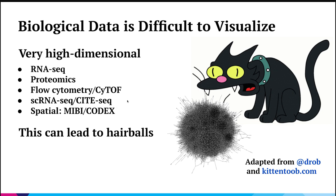For cytometry and CyTOF, you can measure maybe 50 or so proteins, but you're measuring those in hundreds of thousands to millions of cells. Some of the newer datasets like single-cell RNA-seq, CITE-seq, and spatial datasets combine everything where you measure tens of thousands of dimensions across tens of thousands to millions of samples. With newer techniques, you can even measure the actual physical spatial location of single cells in a tissue, so not only do you have your cells in high-dimensional gene expression space, you also know where they are in the tissue.